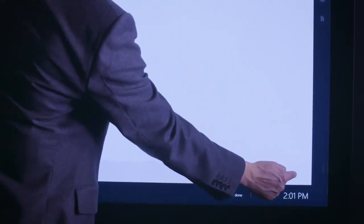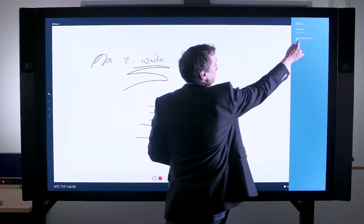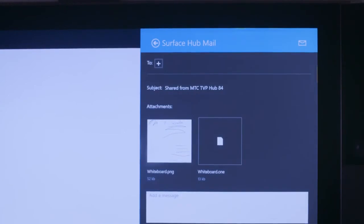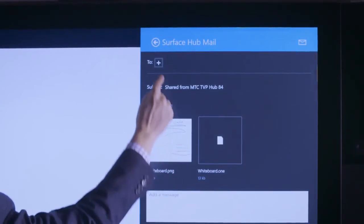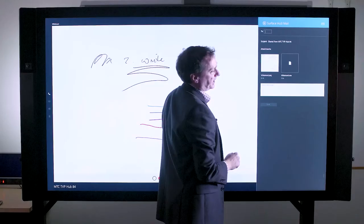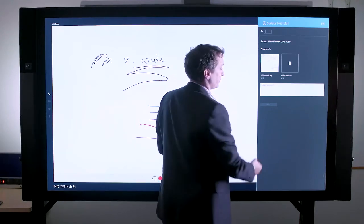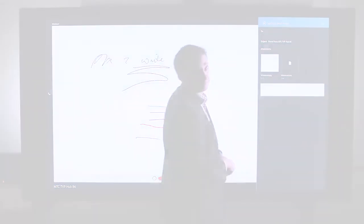I simply click the email icon, which opens up the Surface Hub mail. And here, you can see the content that I've created. And using the plus key, I can now simply start adding URLs and addresses and send this to my colleagues.